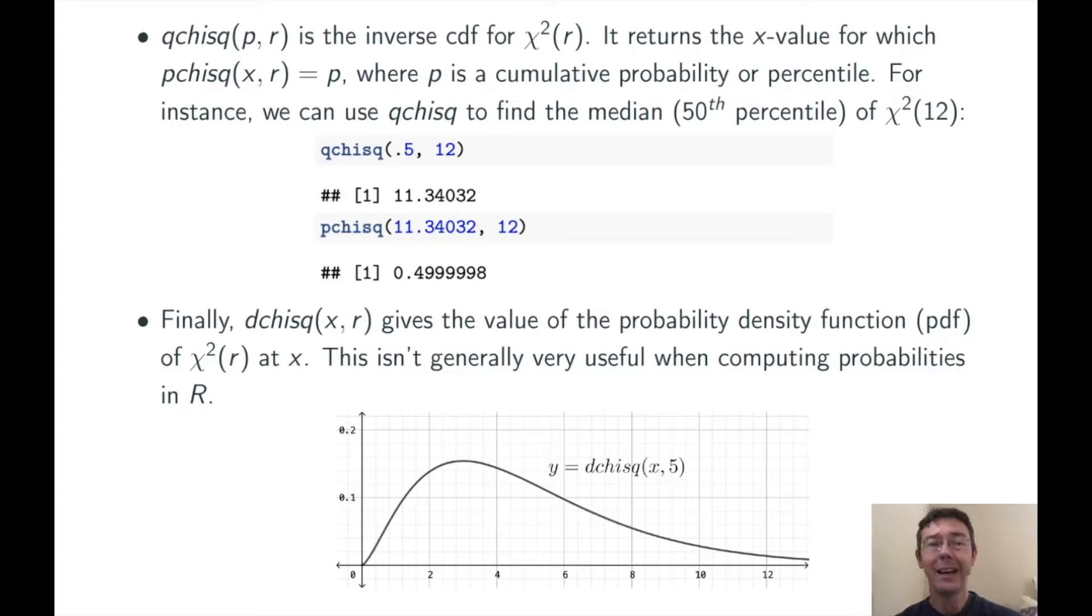Finally, dchisq of X comma R gives the value of the probability density function, or PDF, of chi-squared of R at X. Now, the PDF is of great theoretical importance, but when we're using R, we're doing numerical calculations, and so dchisq is less useful or interesting to us.